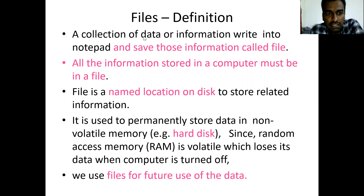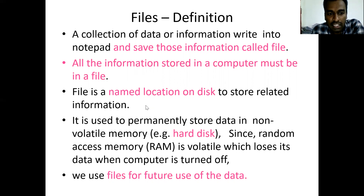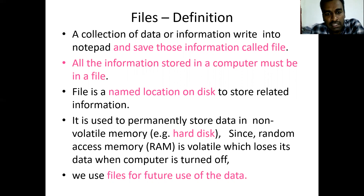The definition of a file means the collection of data or information written into a notepad. We write the data into the notepad, save the information — save it as — and that is called a file. All the information stored in a computer must be in a file. In our computer we have folders, and inside a folder we have some text files or documents — these are called files. A file is a named location on a disk to store related information.